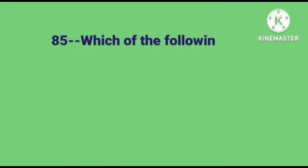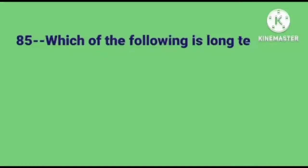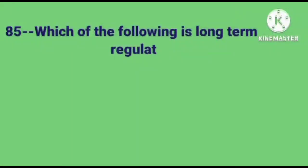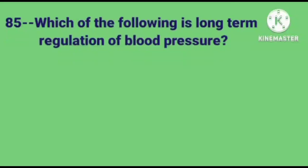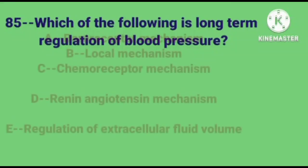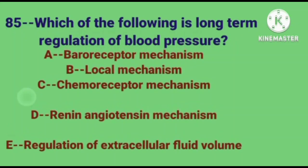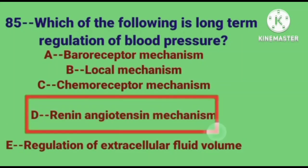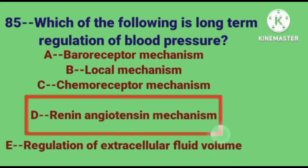Question number 85. Which of the following is a long-term regulation of blood pressure? Correct answer is option D: renin-angiotensin mechanism.